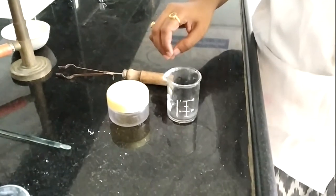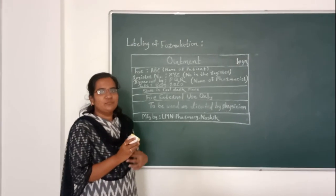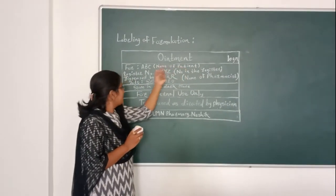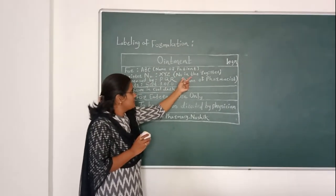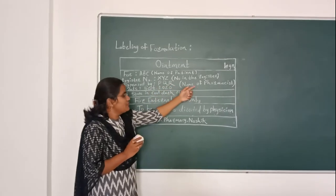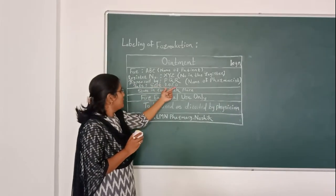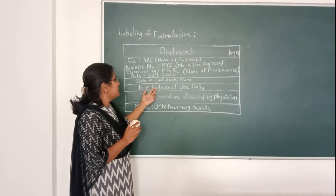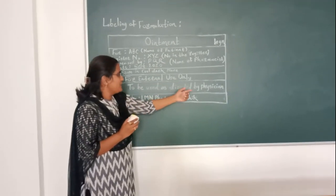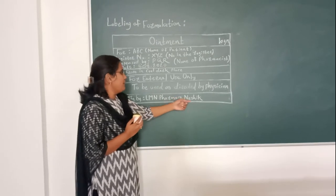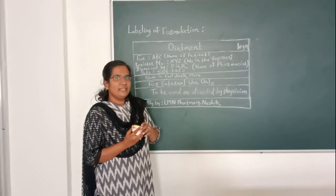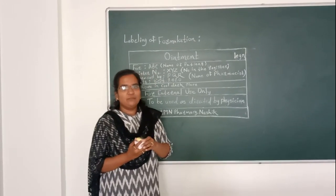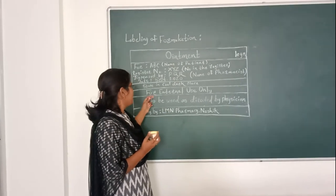Now we will move towards the labeling part. Name of patient ABC, register number XYZ, dispensed by (name of pharmacist), date September 2020. Storage: store in a cool place, this is the storage condition. For external use only, to be used as directed by physician, manufactured by Alum Pharma. Result: 10 grams of ointment submitted for inspection with special instruction on label as for external use only.